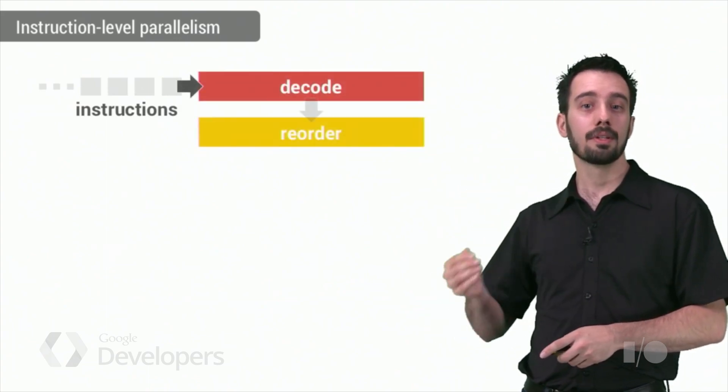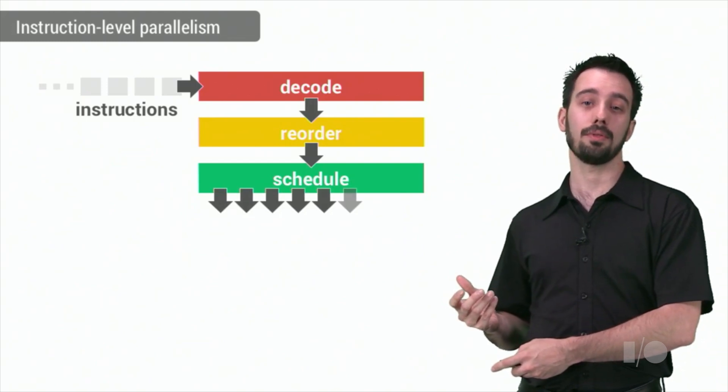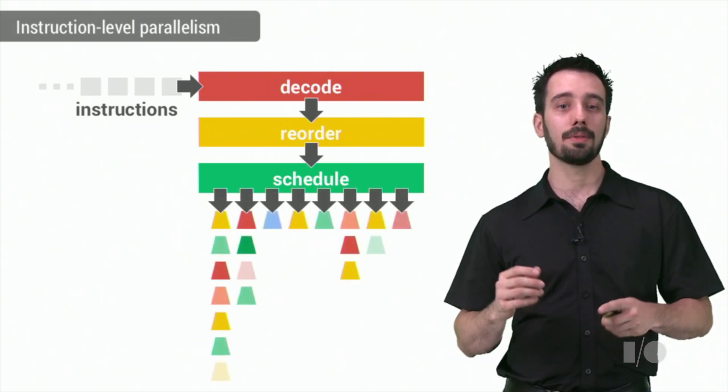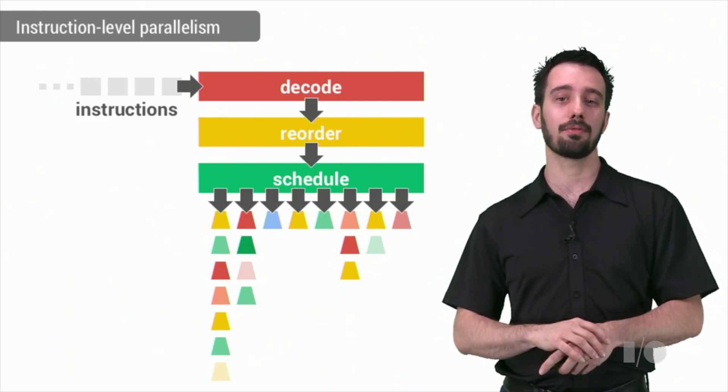Another type of parallelism is at the instruction level. Modern CPUs fetch an instruction stream and decode, reorder, schedule, and execute instructions using a plethora of functional units, all in a very deep pipeline. This parallelism allows the CPU to execute multiple different instructions at the same time, and is mostly free for programmers.